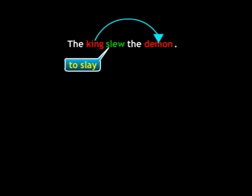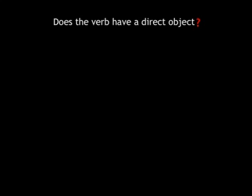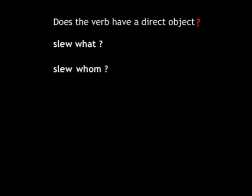Now there are two very important points to remember with respect to transitive verbs. The first point is: how do you determine if a verb has a direct object? This is not that difficult. What you need to do is ask questions such as 'what' and 'whom.' In this case, the verb is 'slew,' so we ask: slew what, or slew whom.